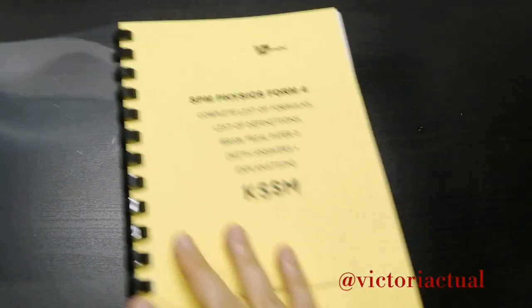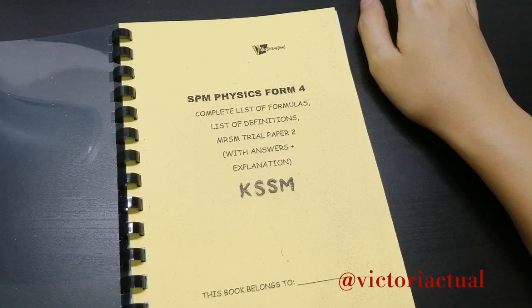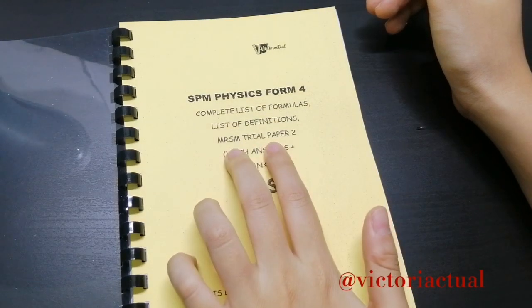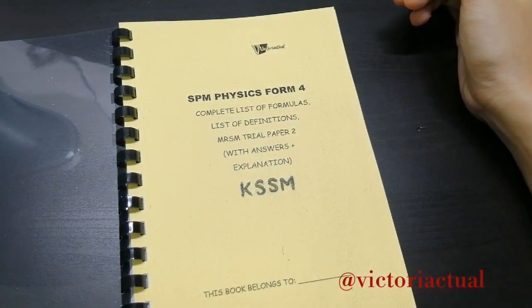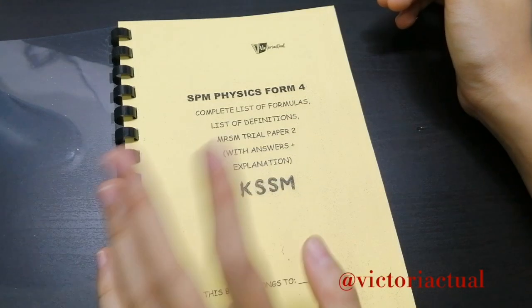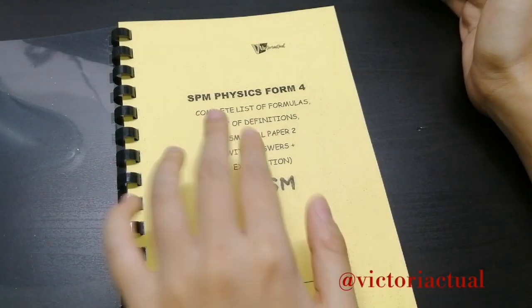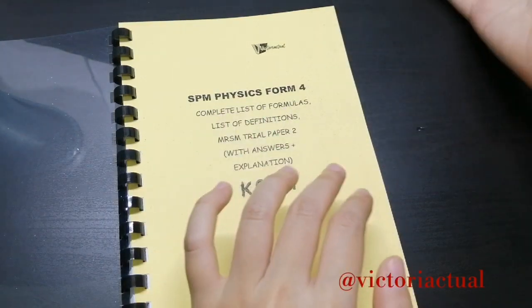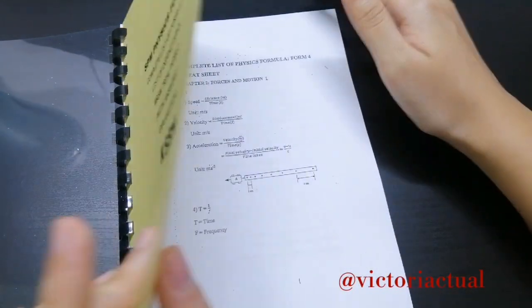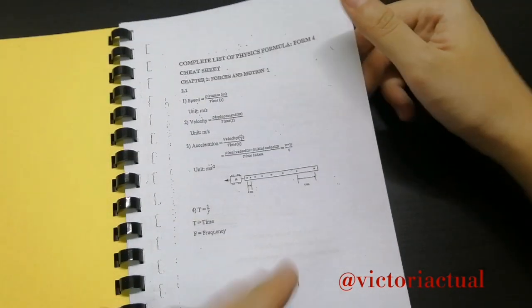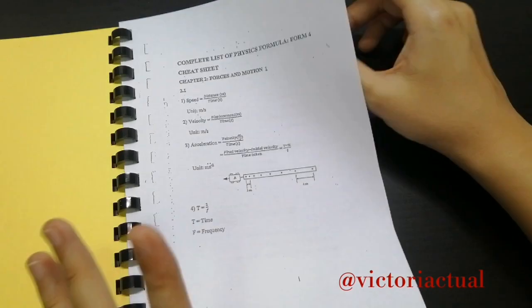So we move on to the next book, which is the Complete List of Formulas, Definitions and MRSM Trial Paper 2 with Answers and Explanations. So the trial paper is for KBSM syllabus, unfortunately, because you guys don't have any MRSM trial papers yet to refer to. So I've included the last syllabus, but the Complete List of Formulas and Definitions is of course according to the latest syllabus.